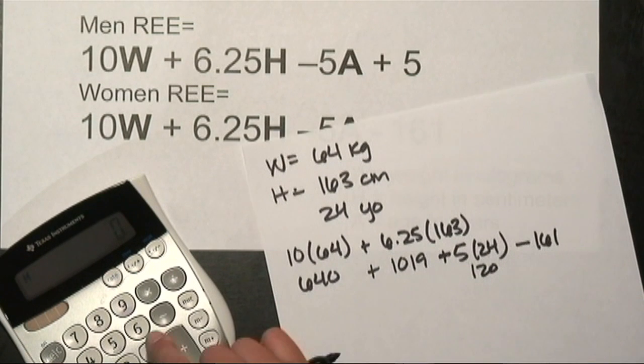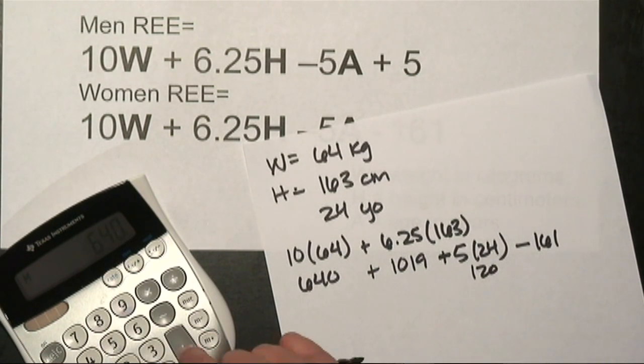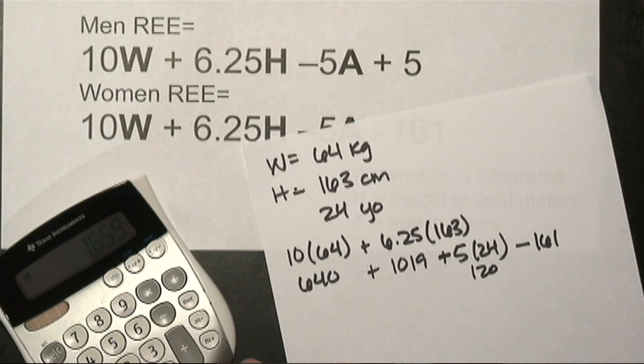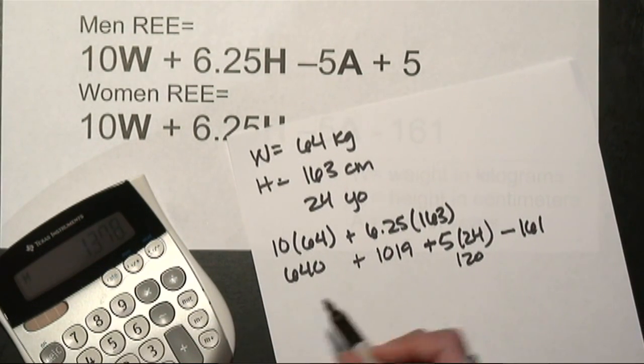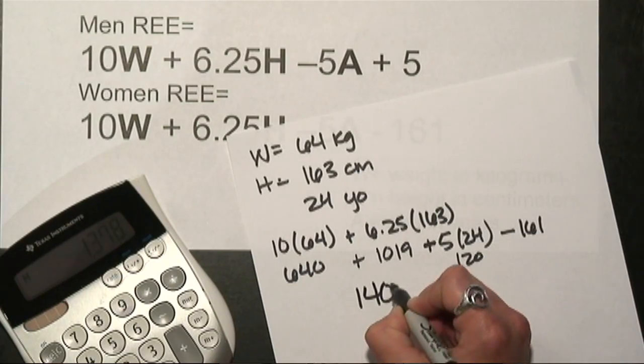Now to plug this all together, 640 plus 1019 minus 120 minus 161. I come up with just about 1400 calories.